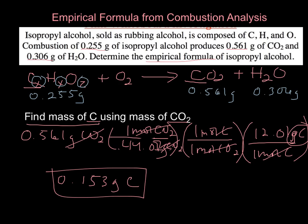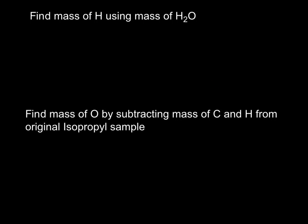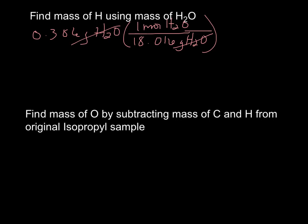I'm going to do the same thing for hydrogen. To find the mass of hydrogen using H2O, because the mass that I started with should be the same mass that I finished with in regards to hydrogen. So I have 0.306 grams of H2O, which is what in the original problem. I want to get to moles of H2O. So for every one mole of H2O, I have 18.016 grams of H2O. That's the molar mass from the periodic table. Grams cancel.